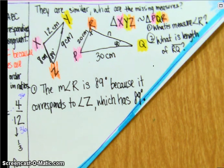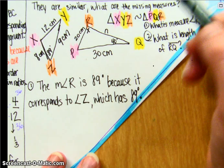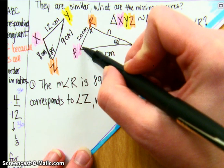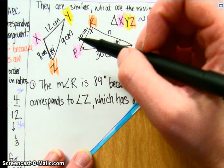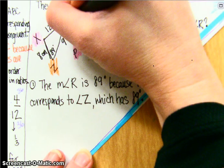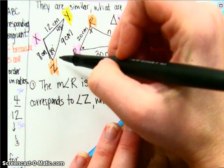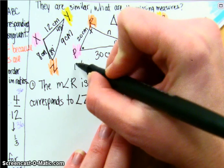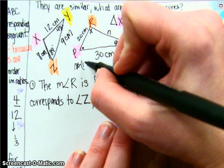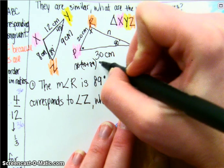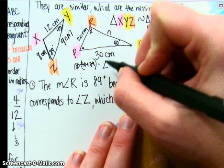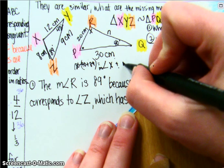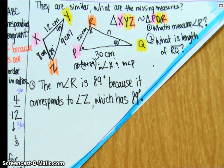No math necessary for that particular question. Now, if it had asked for the measure of angle P, we would say, we could say 180 minus parentheses 40 plus 89, and that would give us the measure of angle X, and the measure of angle P, if we had needed to do that.